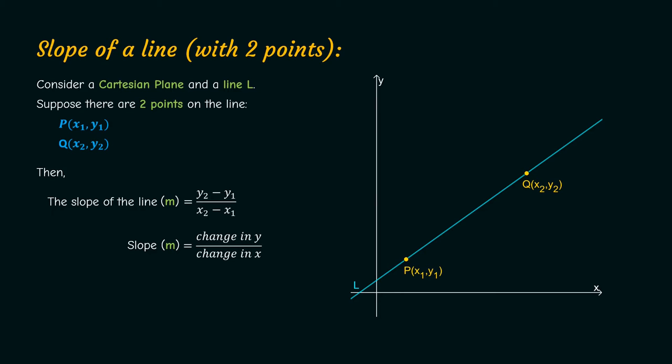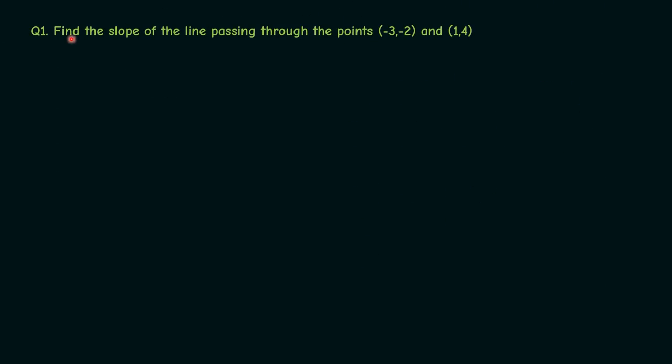Simple right? Now let's try solving some problems on it. First question: Find the slope of the line passing through the points (-3, -2) and (1, 4). Pause the video if you'd like to give this problem a try, and when you are ready keep watching the video.